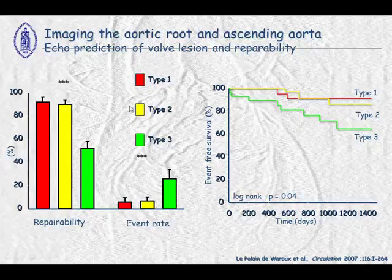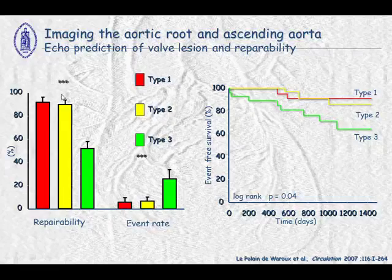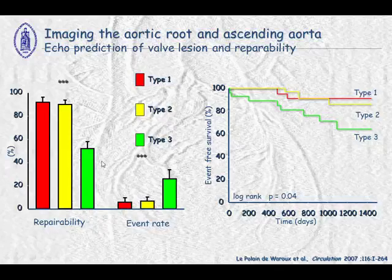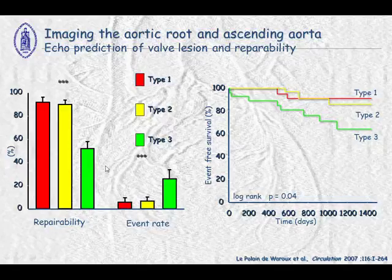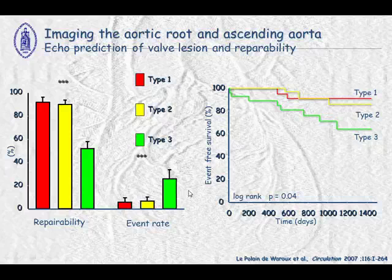In looking at repairability, Type 1 and Type 2 — aortic root dilatation and prolapse — are very suitable for repair. In comparison, Type 3 is not very suitable for repair. In fact, we have more failure and more recurrence in patients with Type 3, which is restrictive aortic valve disease.